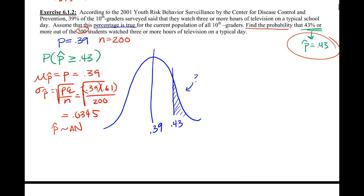So even by common sense, seeing that we expected 39% and we have a larger number and want about more, we should realize that this proportion or this probability is going to be less than 50%.